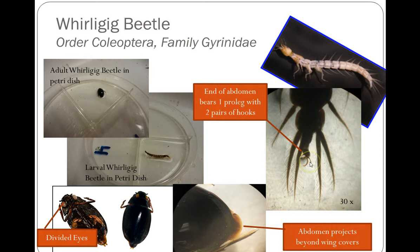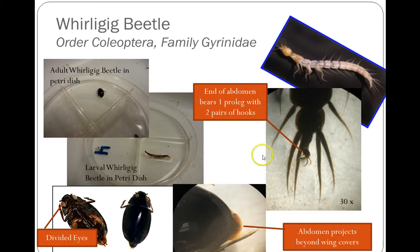Another good characteristic to identify the Whirligig beetle larva is at the end of their abdomen. They have one proleg — one fleshy appendage with two pairs of hooks, used for anchoring in the substrate. Remember the Dobson fly had two prolegs each with a pair of hooks; this has a single proleg with four hooks on it.